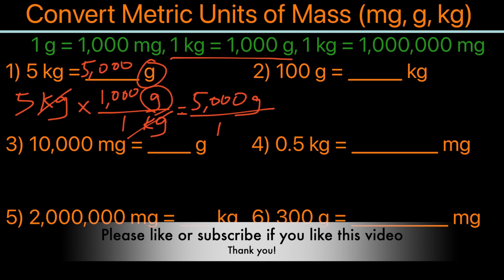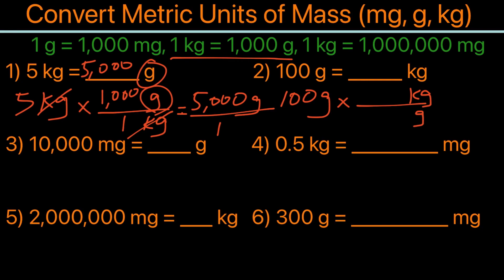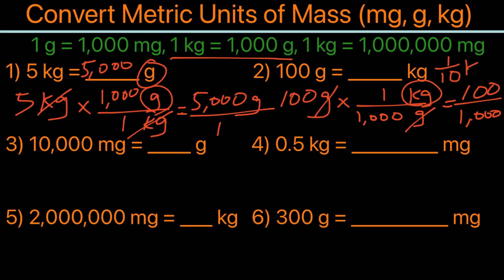For the second example, we have 100 grams — how many kilograms is that? We write 100 grams, placing kilogram in the numerator and grams in the denominator using the same conversion: 1 kilogram equals 1,000 grams. After crossing out the grams, we get 100 over 1,000, which is 1 tenth, or 0.1 kilogram.